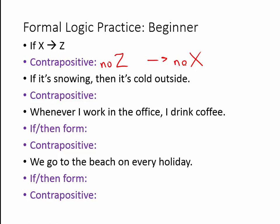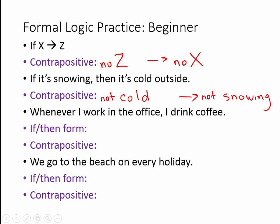Moving on to the next one: if it's snowing, then it's cold outside. Again, let's flip the terms — cold on one side and snowing on the other — and negate them. So the contrapositive is: if it's not cold, then it's not snowing.